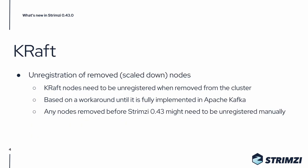As with many of the previous versions, even in this release we continue to refine our KRaft support. In the KRaft mode, nodes which are scaled down and removed from the Kafka cluster need to be unregistered. This is currently not fully implemented in Apache Kafka, but in Strimzi 0.43 we introduce a workaround which allows us to unregister the nodes which were removed. Please keep in mind that any nodes removed from the Kafka cluster before Strimzi 0.43 might need to be unregistered manually.